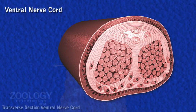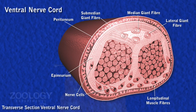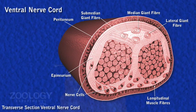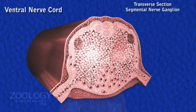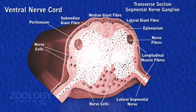Now, please see the transverse section of the nerve cord. It consists of nerve fibers and nerve cells. Externally, the nerve cord is covered by a layer of visceral peritoneum, below which lies a thin layer of longitudinal muscle fibers surrounding a fibrous capsule of epineurium. Two such cords are visible in a section, showing the double nature of the cord. In the regions of segmental ganglia, the two cords of nerve fibers are completely fused along the middle line.